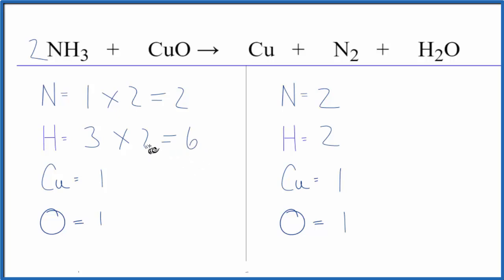We could take and put a 3 in front of the H2O. So now we have 2 times 3. That does balance the hydrogens, and then 1 times the 3. That'll give me 3 oxygen atoms.